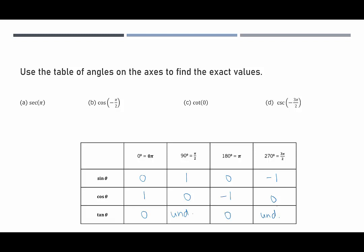Secant of pi. So secant, that is the reciprocal of cosine. We're going to look at cosine here to figure out secant of pi. Pi is right here, this column. It's negative 1. So it would be the reciprocal of negative 1, which would be negative 1. So secant of pi is negative 1.